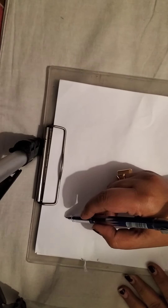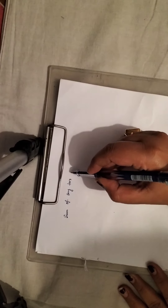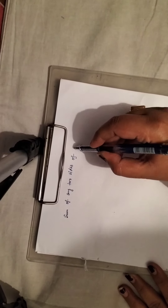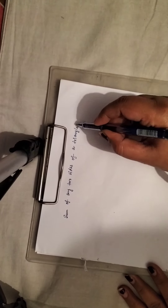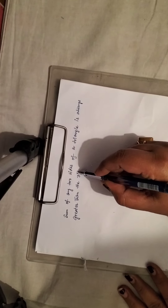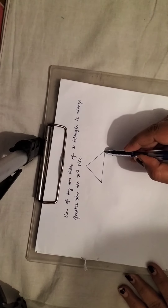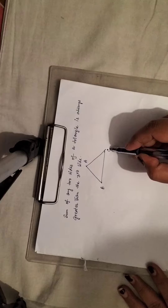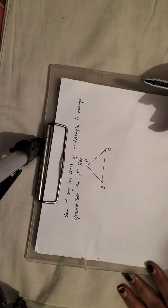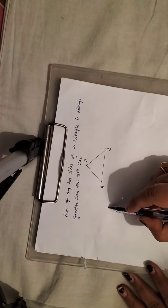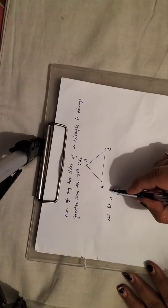Hello students, today we are going to learn a very important property of a triangle: the sum of any two sides of a triangle is always greater than the third side. So if we consider a triangle — suppose here I am drawing a triangle ABC — we will find that the summation of any two sides of it is greater than the third side. For our convenience, let us consider that BC is the largest side.